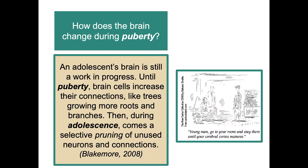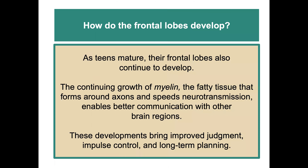How does the brain change during puberty? An adolescent's brain is still very much a work in progress. Until puberty, brain cells increase their connections — almost like trees growing more roots and branches, like a dendritic arbor. Then during adolescence there is a selective pruning of unused neurons and connections. As teens mature, their frontal lobes continue to develop. The continuing growth of myelin — the fatty tissue that forms around the axons and speeds up neurotransmissions — enables better communication with other brain regions. These developments bring improved judgment, impulse control, and long-term planning.